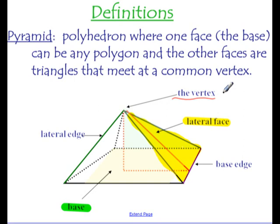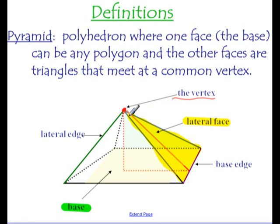By definition, a pyramid doesn't have to have a square base — it could have an octagonal base. What makes it a pyramid is that it has a base that's a polygon, and then all the other vertices connect at one point. So you take all the corners of whatever that base is, and they all meet at one top point. Those are your lateral edges, which are the edges of the lateral faces, and those faces are always triangles in a pyramid.